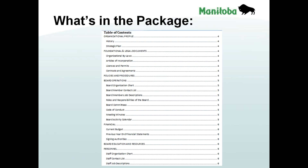You can include foundation or legal documents such as your bylaws, articles of incorporation, permits, licenses, contracts, or agreements. It's important to include an updated copy of your policies and procedures. For board operations, include an organizational chart, a list of board members, position descriptions for your executive, roles and responsibilities of the board, a list of committees or working groups, the code of conduct, previous meeting minutes, and even a copy of your board activity calendar so new members know what happens in the course of an annual cycle.